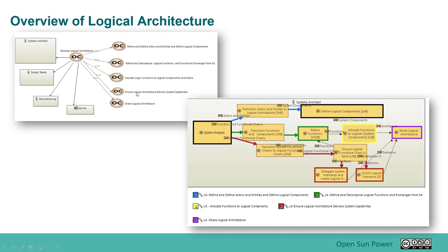Next, we want to ensure the logical architecture delivers the system capabilities. We do that by making sure through the red flow here that we have the functional chains delivered that we had from the system analysis, and make sure that those functional chains are now being delivered in this logical phase through all the different components.